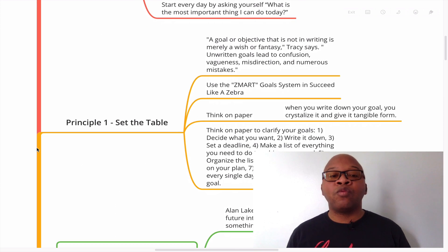Principle number one is to set the table. A goal or objective that is not in writing is merely a wish or fantasy. Unwritten goals lead to confusion, vagueness, misdirection, and numerous mistakes.